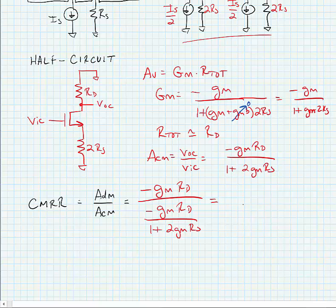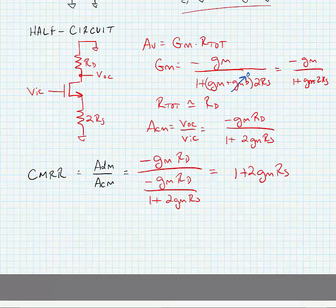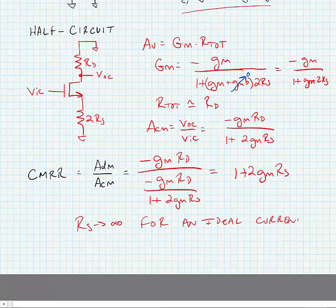we find that our common mode rejection ratio is equal to 1 plus 2gm RS. All right so what we know about this is that for an ideal current source RS goes to infinity. And of course if RS goes to infinity that implies that our CMRR goes to infinity. And this is exactly what we would like to see happen.